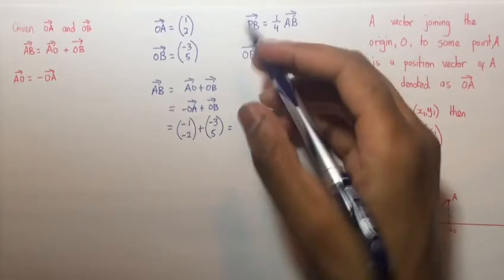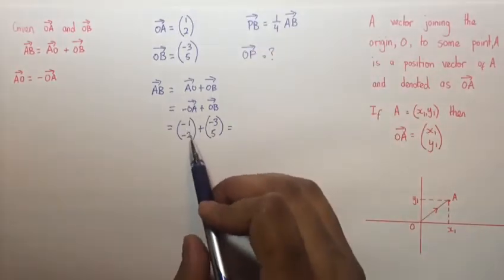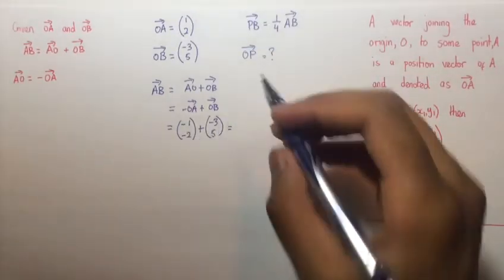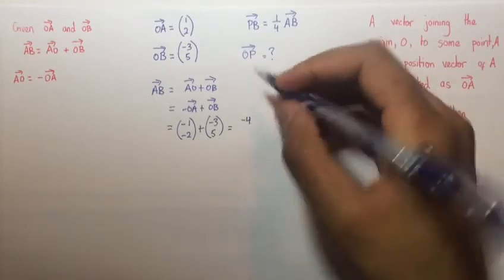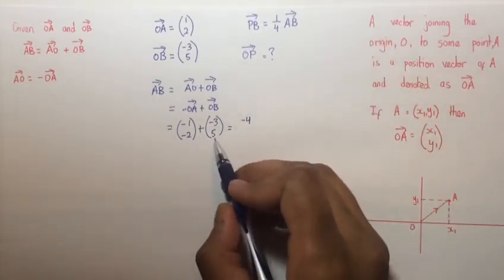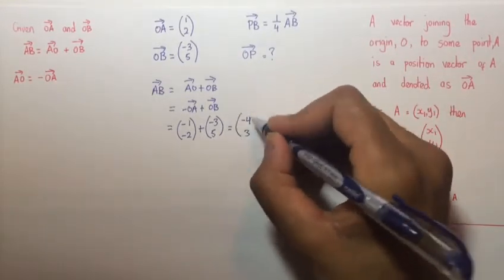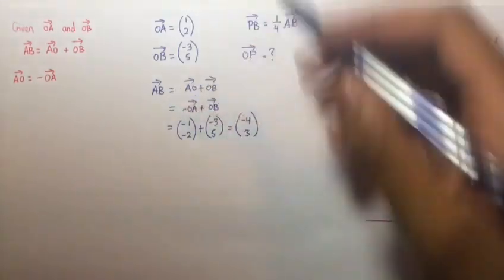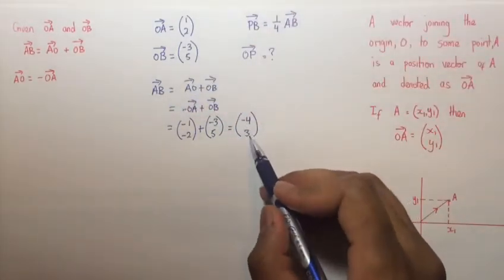And when we are adding vectors, we simply add the corresponding entries. So -1 plus -3 gives us -4 and -2 plus 5 gives us 3. So therefore the vector AB is simply (-4, 3).